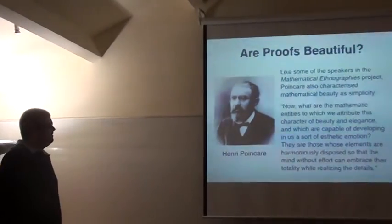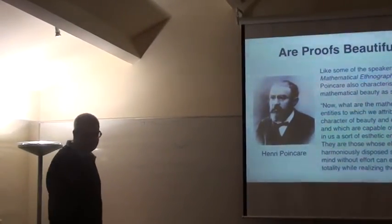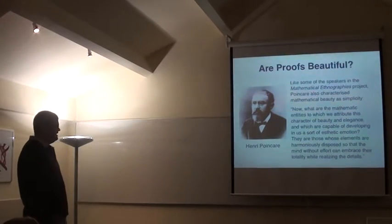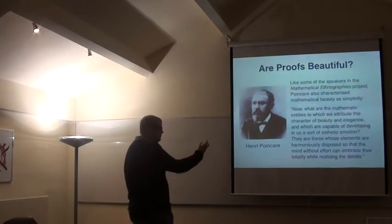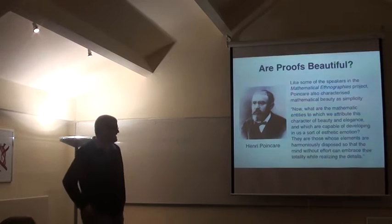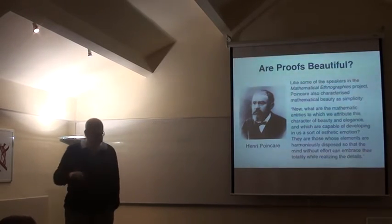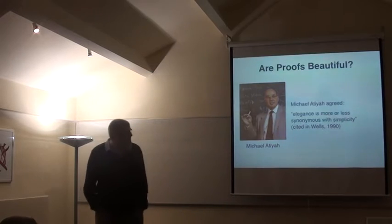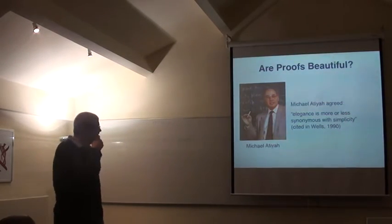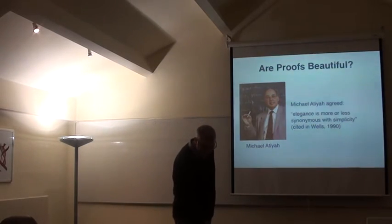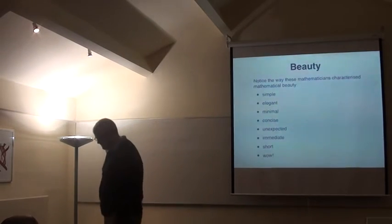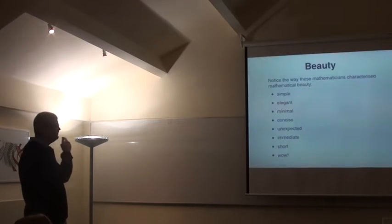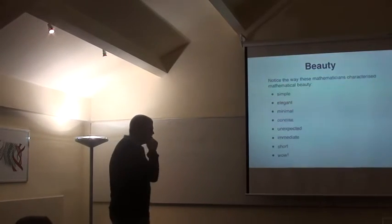So I just want to pick up some of the themes in that video, in particular the relationship between mathematical beauty and simplicity. So this is Poincaré, and he has this quote where he says that the character of beauty and elegance are from things where the mind, without effort, can embrace their totality while realizing the detail. So he makes this link between simplicity and beauty. And he's not the only person who does this. Lots and lots of people do this. So here's Atiyah: elegance is more or less synonymous with simplicity. So I'm going to come back to that later.